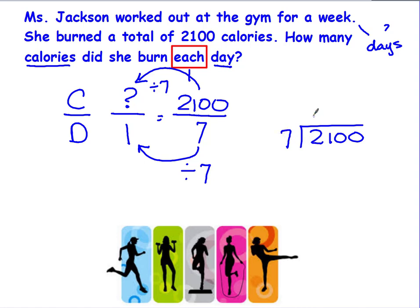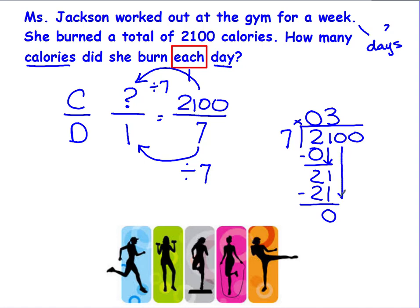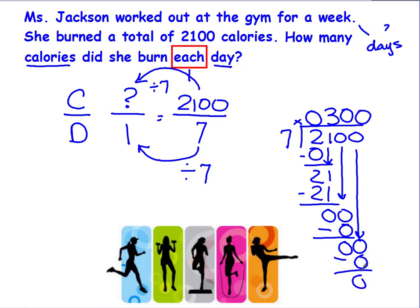I can't get any groups of seven out of two, so I put a zero there. I can get three groups of seven out of 21. Remember, if there are four numbers in my dividend, I need four numbers in my quotient. So I bring down a zero — I can't get any groups of seven out of zero. I bring down my last zero, and every time I bring a number down, there has to be a number above it in the quotient. I can't get any groups of seven out of zero. The correct answer is 300 calories.